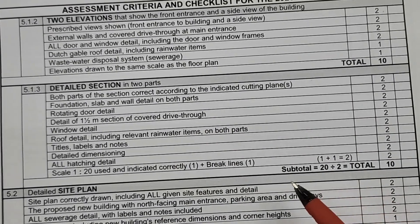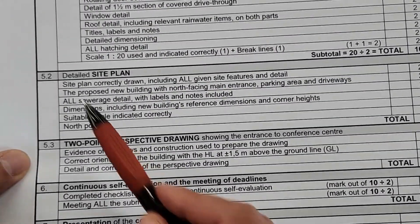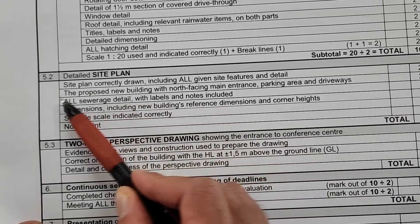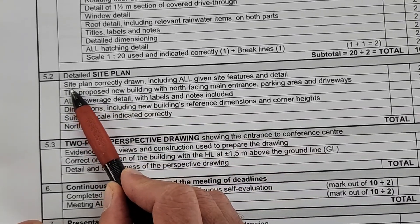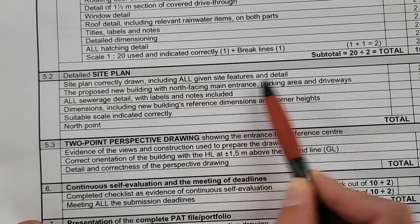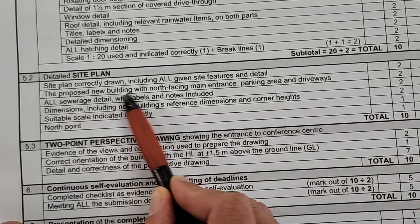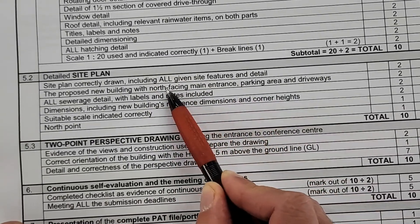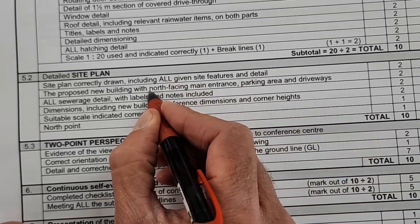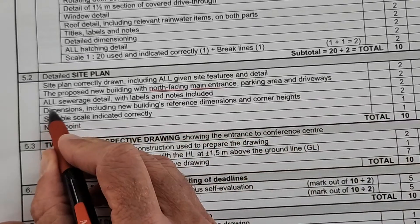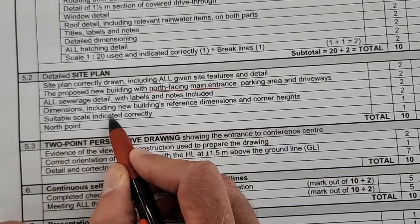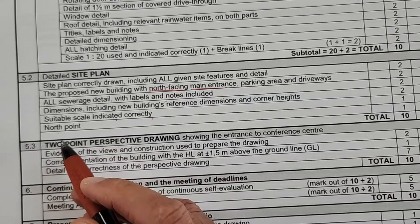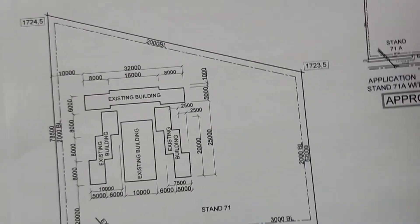Looking at the checklist we'll use to allocate marks: under site plan 5.2, we have just two more drawings ahead — a two-point perspective — so the site plan is the second-last drawing in this collection. The checklist asks: Did you draw your site plan correctly including all given site features? That's two marks. The proposed new building must have a north-facing entrance — the main entrance must face north — plus the parking area, driveways, a detail with labels and notes, dimensions including new building reference dimensions and corner heights, suitable scale indicated correctly, and the north point.